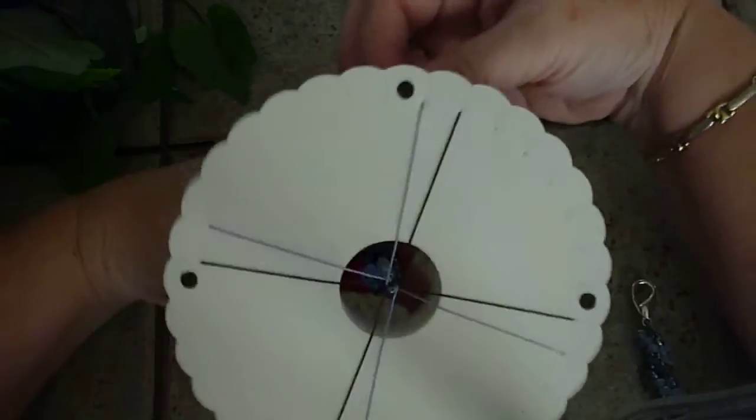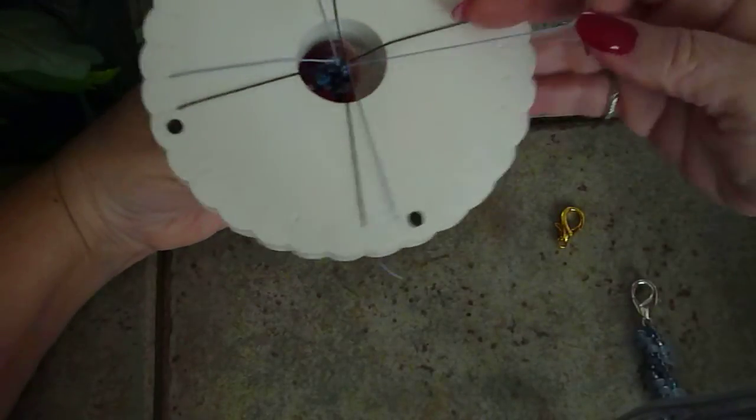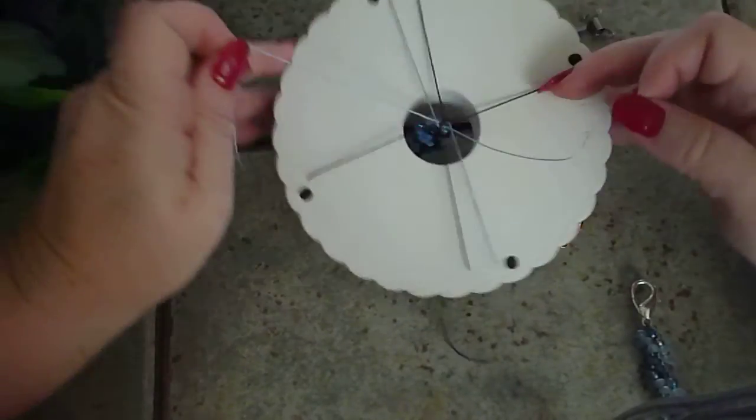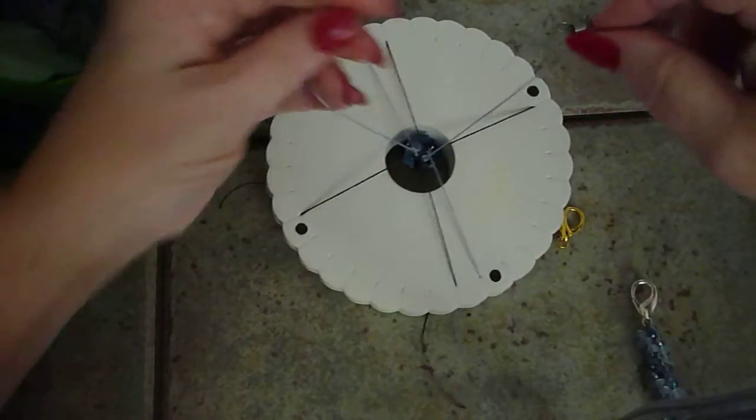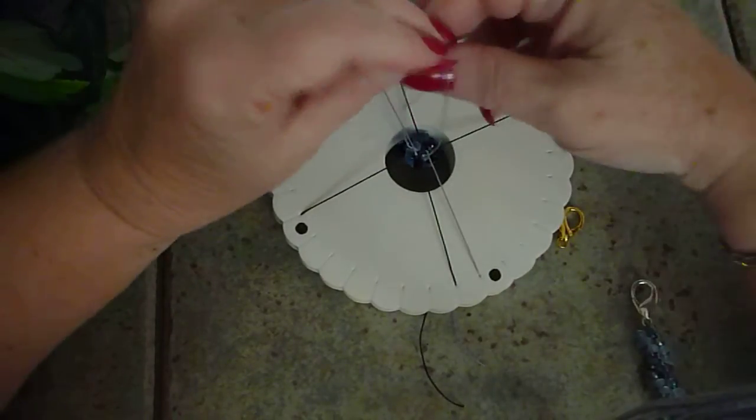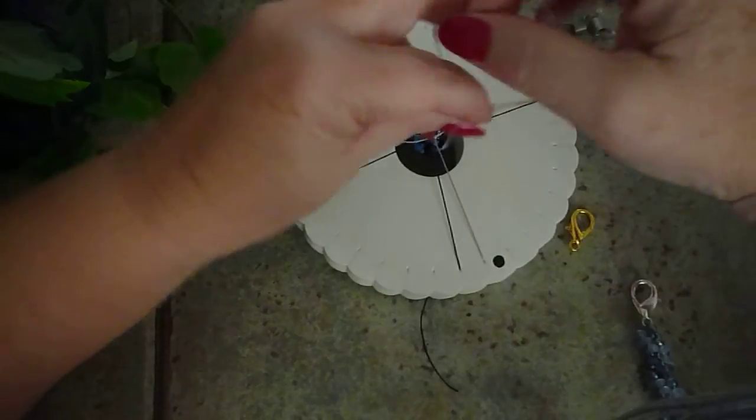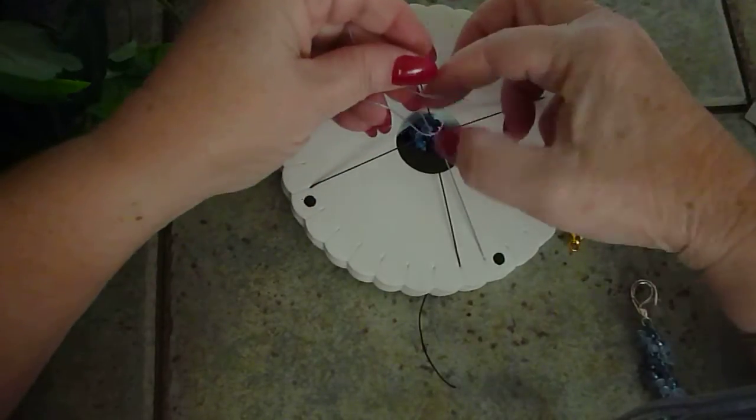And then what I do is take the next two cords that would be the ones that you would be braiding with. And I lift them up. I tie it overhand knot. And again, making it a square knot.